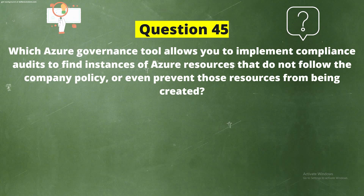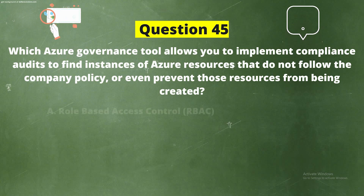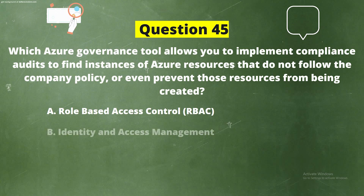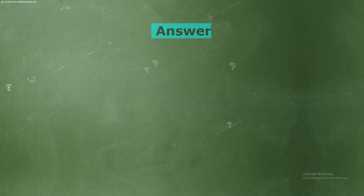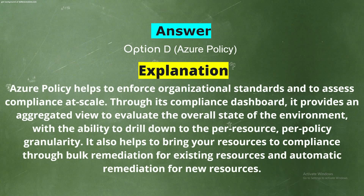Question 45: Which Azure governance tool allows you to implement compliance audits to find instances of Azure resources that do not follow company policy, or even prevent those resources from being created? Options: Option A, Role-Based Access Control; Option B, Identity and Access Management; Option C, Resource Logs; Option D, Azure Policy. The correct answer is Option D, Azure Policy. Explanation: Azure Policy helps enforce organizational standards and assess compliance at scale through its compliance dashboard, providing an aggregated view to evaluate the overall state of the environment, with the ability to drill down to per-resource, per-policy granularity. It also helps bring resources into compliance through bulk remediation for existing resources and automatic remediation for new resources.